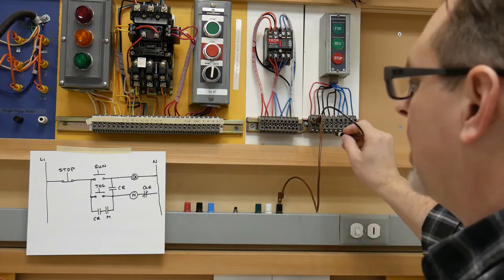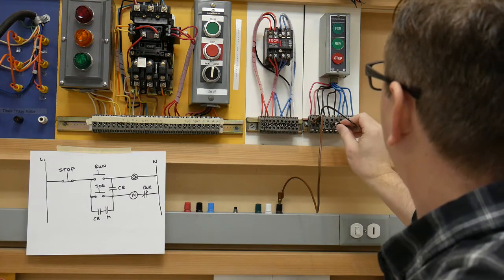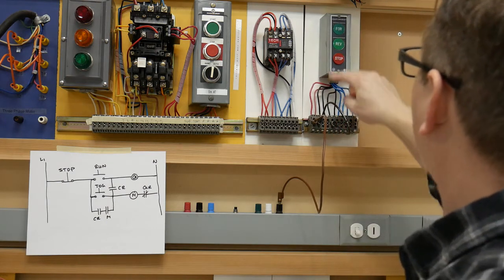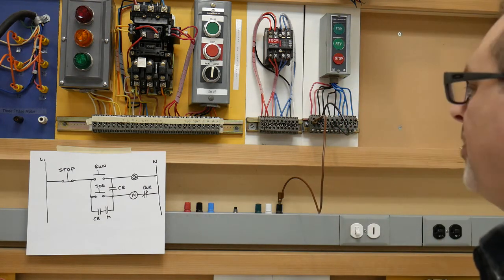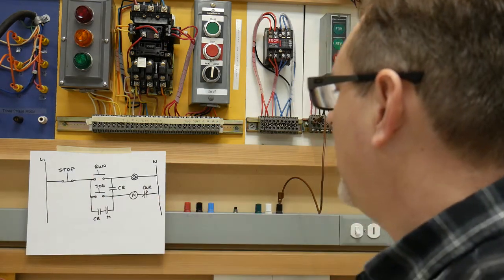We're going to come out of that stop push button and we're going to go to a normally open run. So I'm going to use my black wire for that or my black set of normally open contacts. So that's this jumper here.